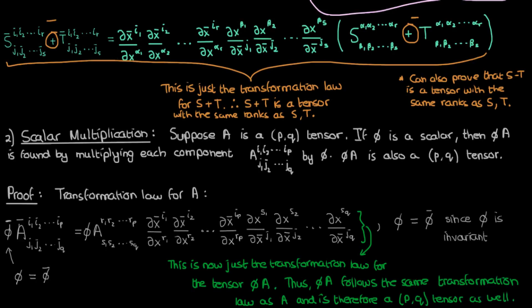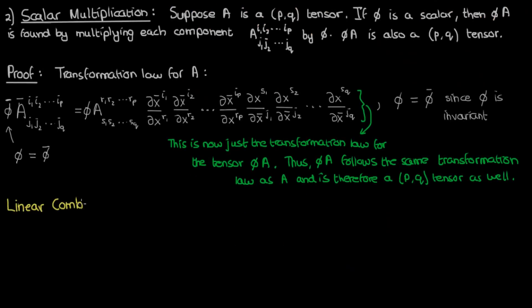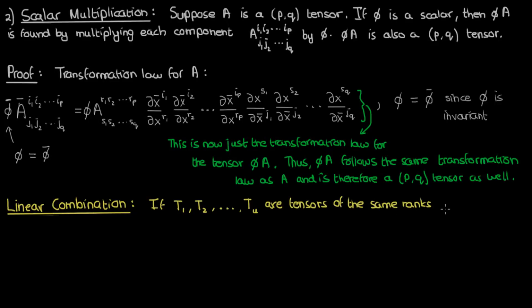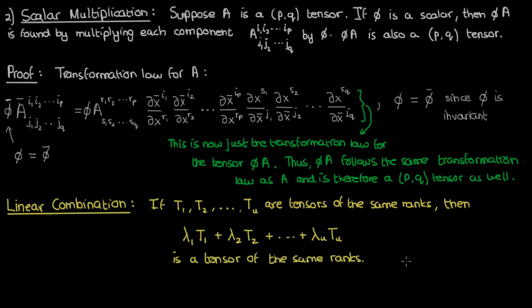Since we've covered summation and scalar multiplication, we can combine those and talk about linear combinations. If we have tensors t1 through tu with the same contravariant and covariant ranks, and scalars lambda 1 through lambda u, then the linear combination lambda1*t1 + lambda2*t2 + ... + lambdau*tu will also have the same contravariant and covariant ranks. This is an extension of the sum and scalar multiplication theorems: if the sum of tensors with the same ranks is a tensor of those ranks, and the scalar multiple of a tensor has the same ranks, then any linear combination of tensors with matching ranks is also a tensor of the same rank.